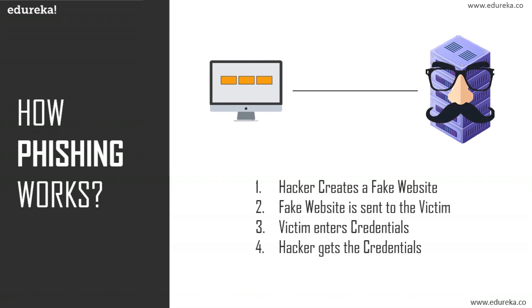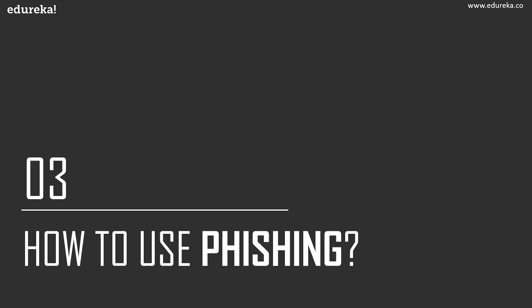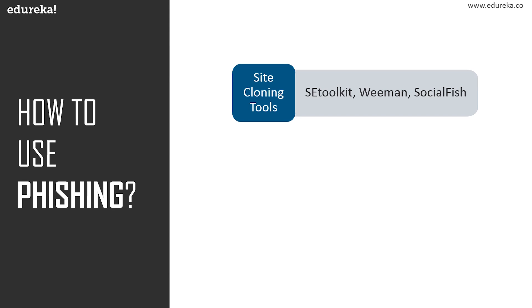Now let's see how you can use phishing to steal credentials. There are different ways, and which you use depends on your victim. The first way is using already existing tools. There are different tools available — some are pre-installed in certain penetration testing operating systems, and most are available online on the internet, with almost every one of them available on GitHub to download and use. For this demo, I'll be using SE Toolkit, which stands for Social Engineering Toolkit. There are other tools like Wifiphisher and Social Fish, but they do basically the same thing.